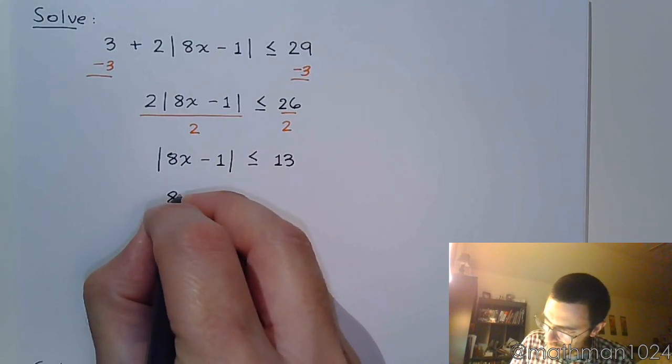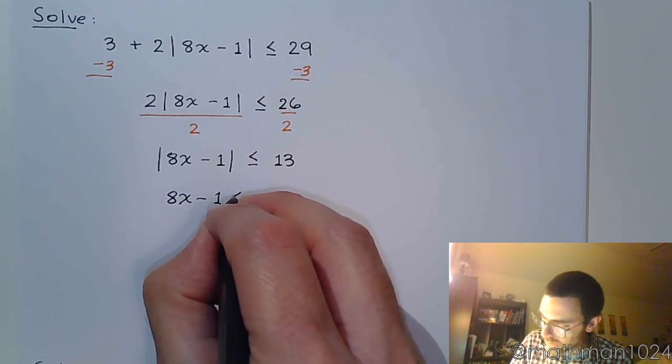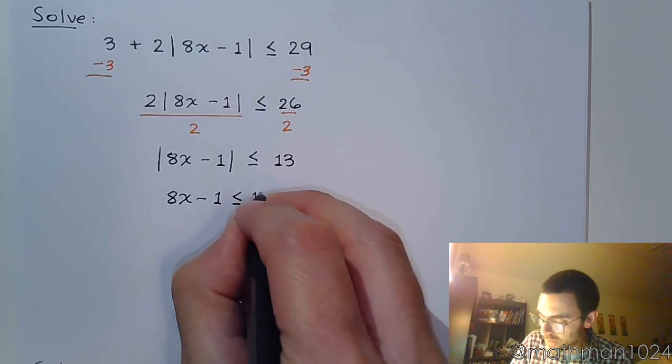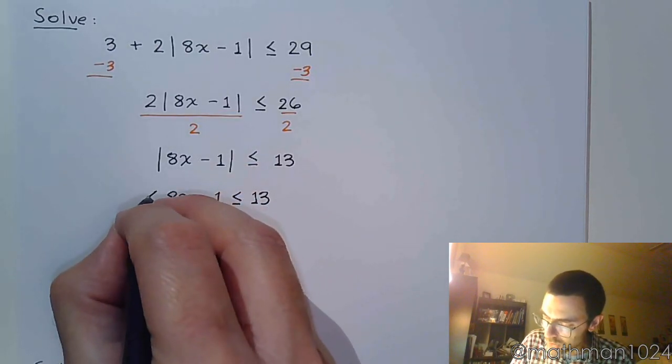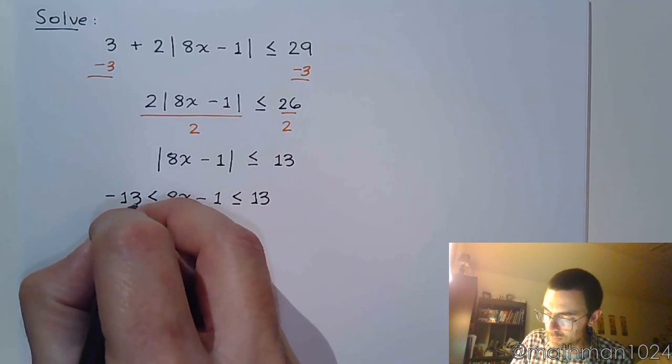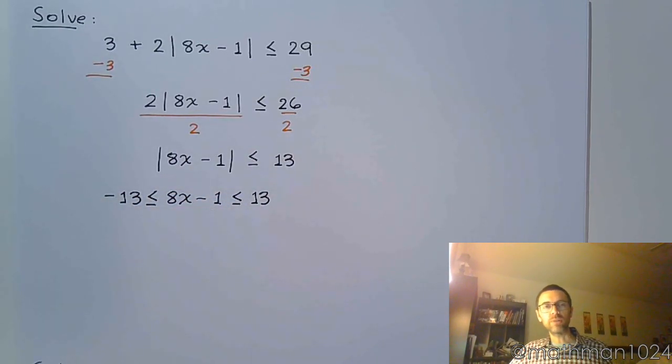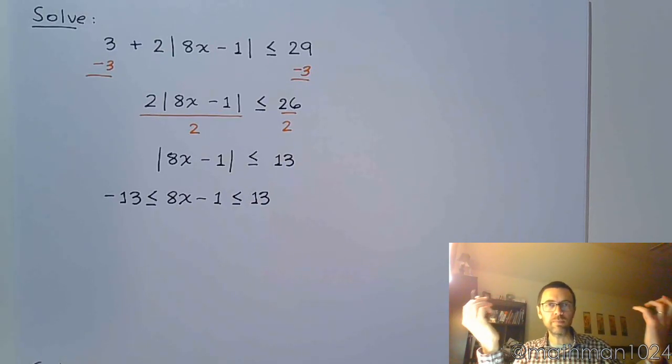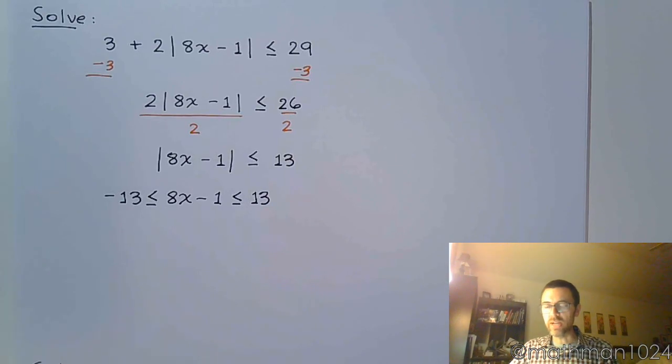So that means that 8x minus 1 is less than or equal to 13, while at the same time being greater than or equal to its opposite negative 13. You've got those boundaries. You're between negative 13 and 13, and we're going to solve this to see where we end up.